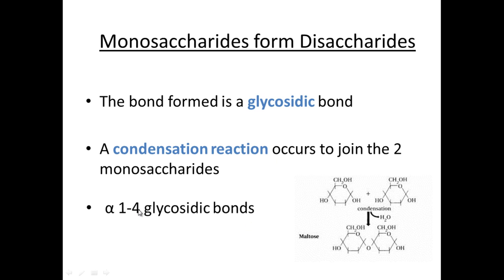We sometimes refer to this, particularly in the example of maltose, as a 1-4 glycosidic bond, and this is due to the carbons that are being joined. On the left-hand glucose, this would be carbon one, and the corresponding carbon on the other glucose would be carbon four — so it's referred to as a 1-4 glycosidic bond. If you join me next time, we'll be looking at some more monosaccharides and disaccharides.